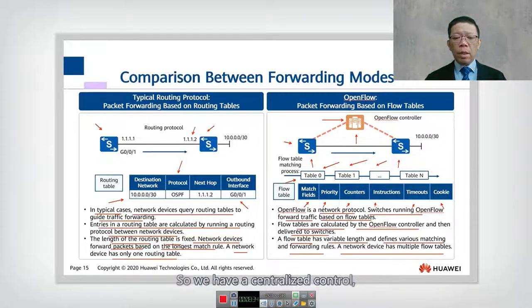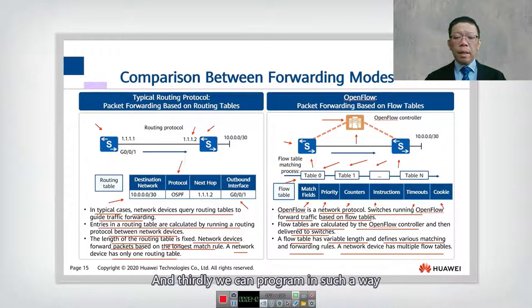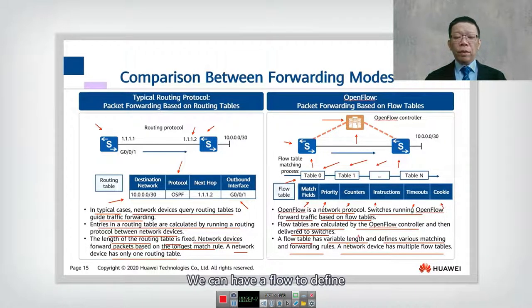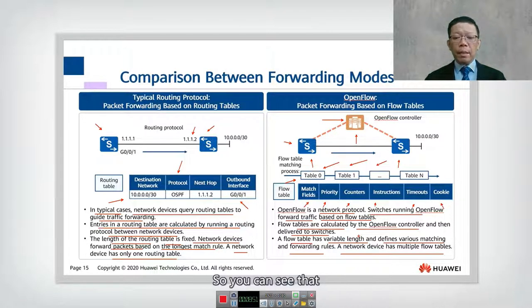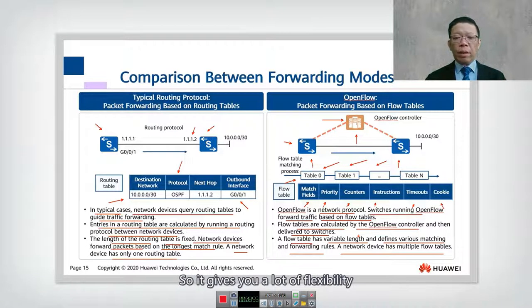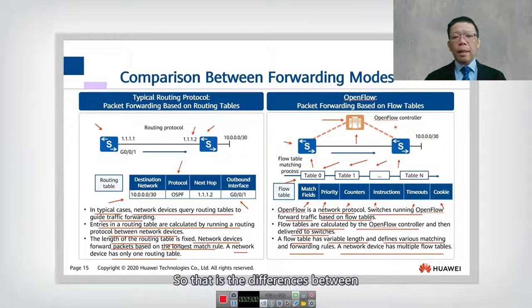Thirdly, with OpenFlow we are not required to follow the longest-match rule. We can define how matching is performed based on our needs through programmability, giving a lot of flexibility while still maintaining the overall topology view inside the controller. That is the difference between a traditional routing table and a flow table.